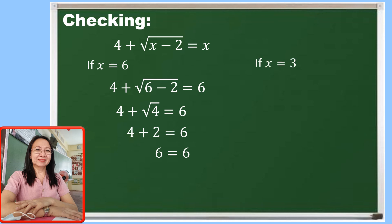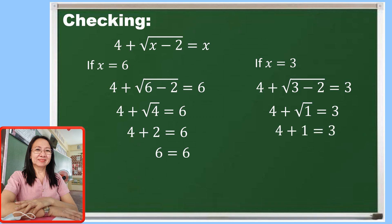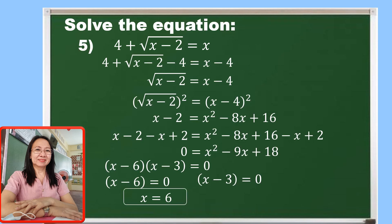What if the value of x is equal to 3? By substitution, 4 plus the square root of 3 minus 2 is equal to 3. Simplifying, the square root of 1 is 1, and 4 plus 1 gives us 5, and 5 is not equal to 3. Since the left side is not equal to the right side, the value x equals 3 is not accepted. Only 6 is the accepted value. The value x equals 3 is called an extraneous root and must be rejected.